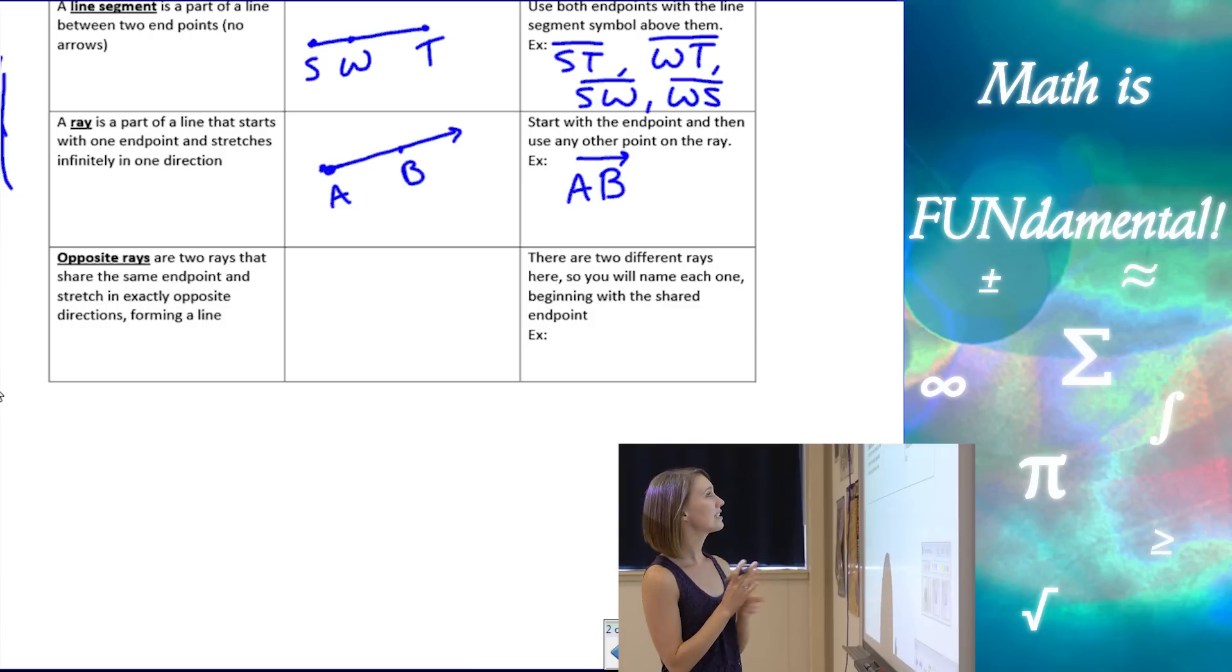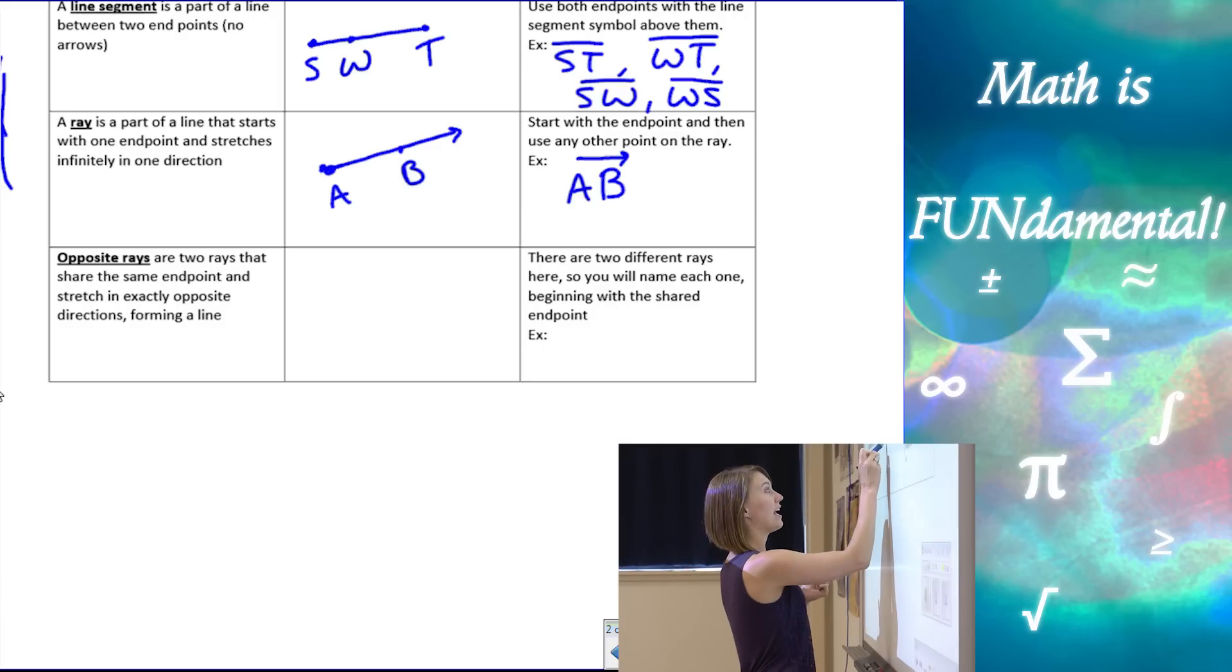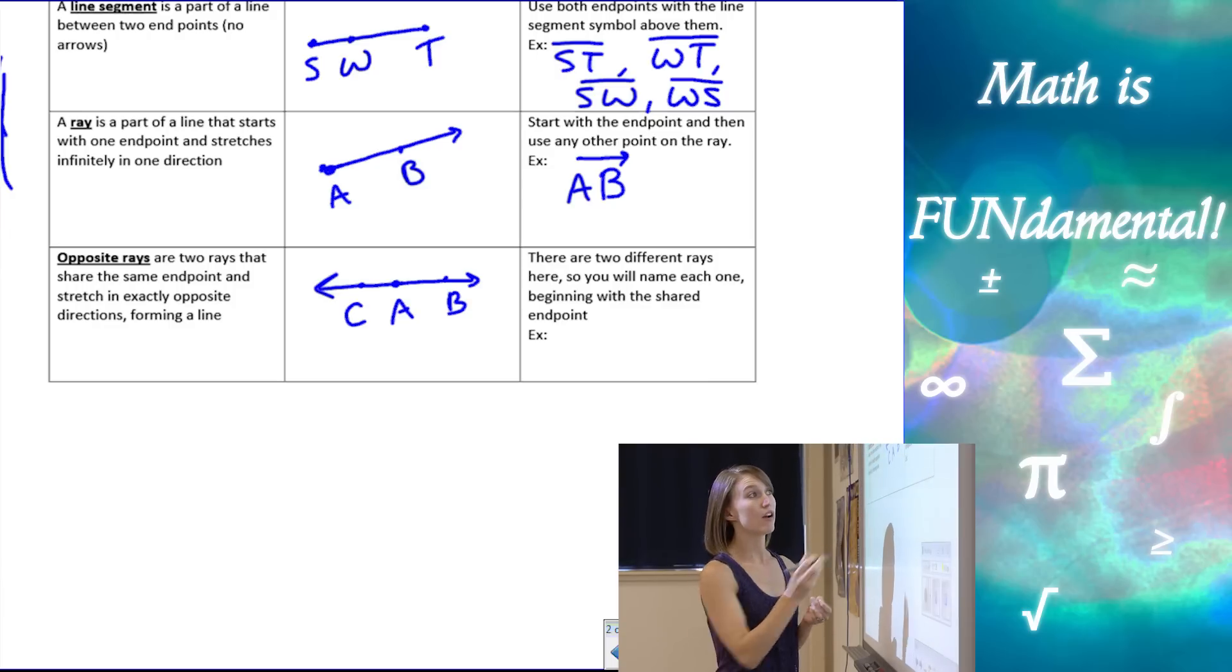And our last term is going to be opposite rays. So opposite rays are going to be two rays that go in exactly opposite directions but share an end point. And it ends up making a line. So here, if I start with one ray and an end point, and then I use the same end point but go in the exact opposite direction, look what happens. It makes a line with a dot in the middle. So if I have A, B, and C, then our rays A, B and A, C are going to be our opposite rays.